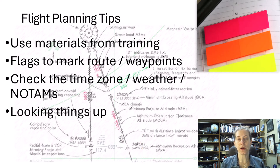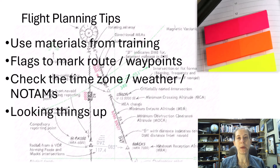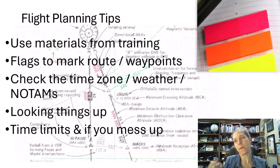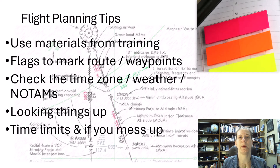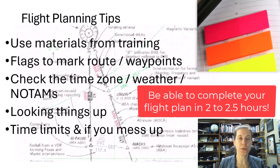You are going to need to look some things up — your fuel burns, weight and balance, and similar items. You have your training materials and can look things up, but there is a time limit. If you're going to spend four hours just planning the flight, that's not going to go well with the examiner. At this point in your training, you should be able to produce a manual flight plan in roughly two to two and a half hours. If not, you should be practicing and getting faster before you go take the test.